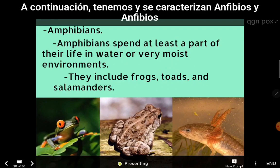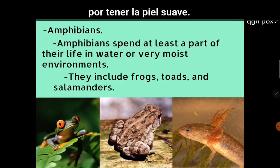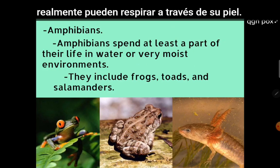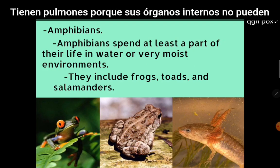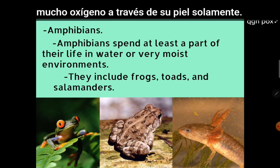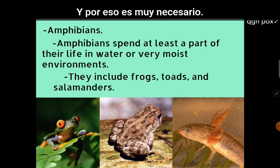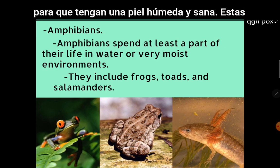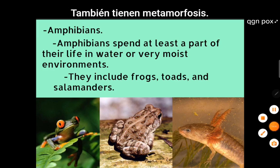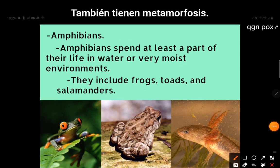Next we have amphibians. Amphibians are characterized by having smooth skin that's very thin. Their skin is thin enough that they can actually breathe through it. They do have lungs because their internal organs could not be oxygenated without them, but they can diffuse a lot of oxygen through their skin alone. It is very necessary for them to have moist and healthy skin. These include frogs, toads, and salamanders. They also have metamorphosis.